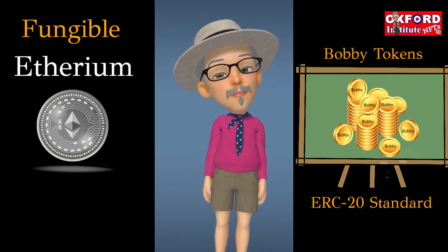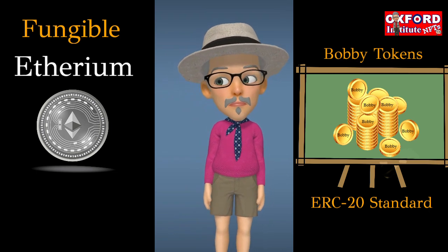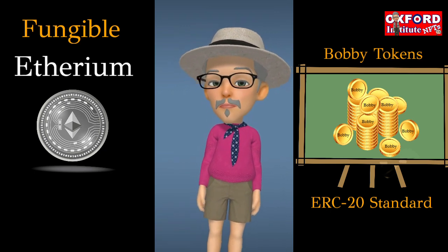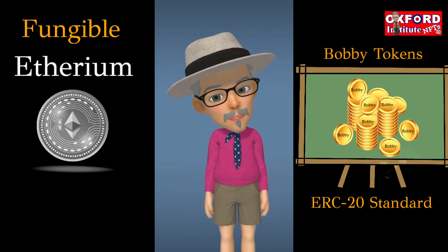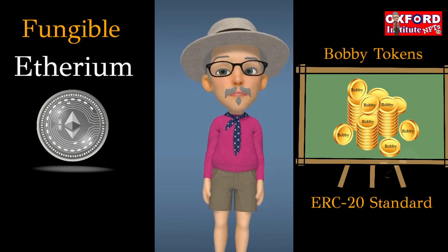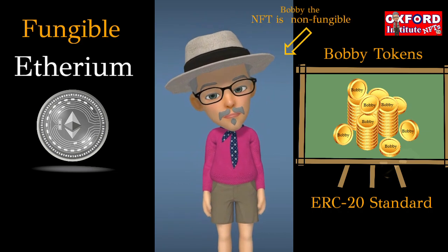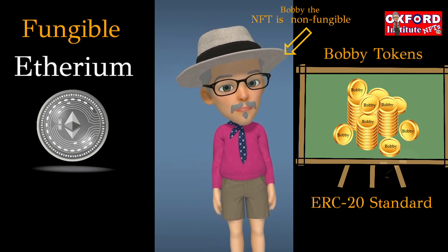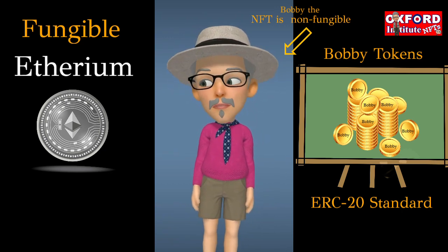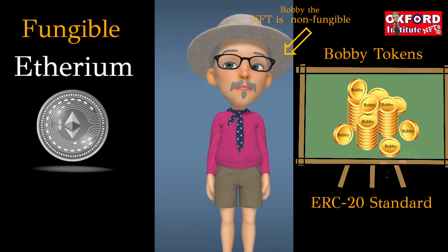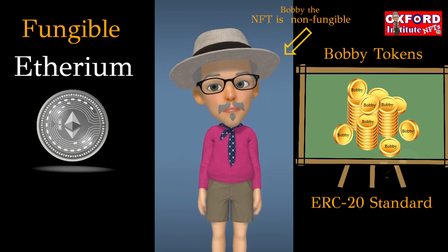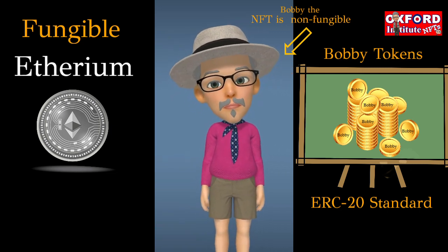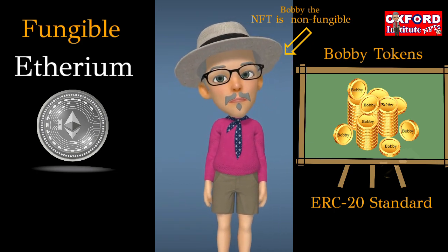One token is equal to another token. You know, people could learn from this — because from what I can see, people are not equal in the 21st century. Maybe we should all live on a blockchain and then we'd all be fungible. I'm an NFT — a non-fungible token — but if I were fungible, I would be equal to something else, like one dollar equaling another dollar. But people are not equal in this society — we still have divisions. We could learn a lot from this.